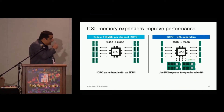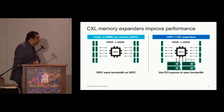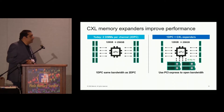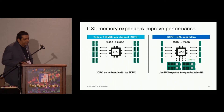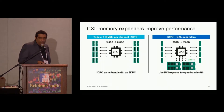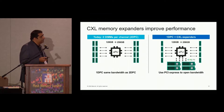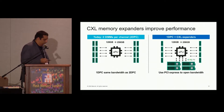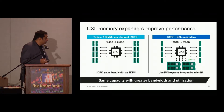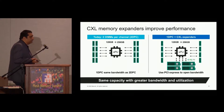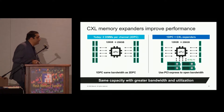With CXL, we can add four links to an XPU — where XPU is defined as a CPU, a GPU, or a DPU. This gives you more memory expansion and also more memory bandwidth. So you get the same capacity but with bandwidth and utilization significantly improved.